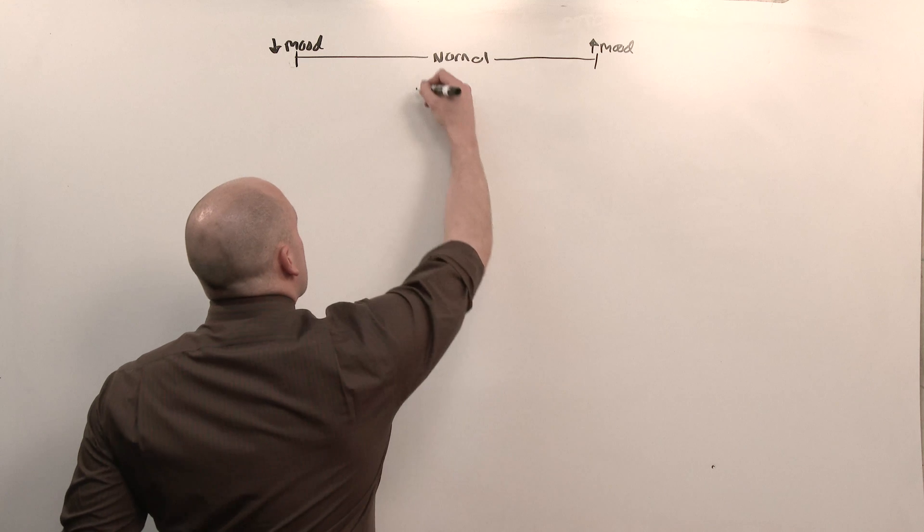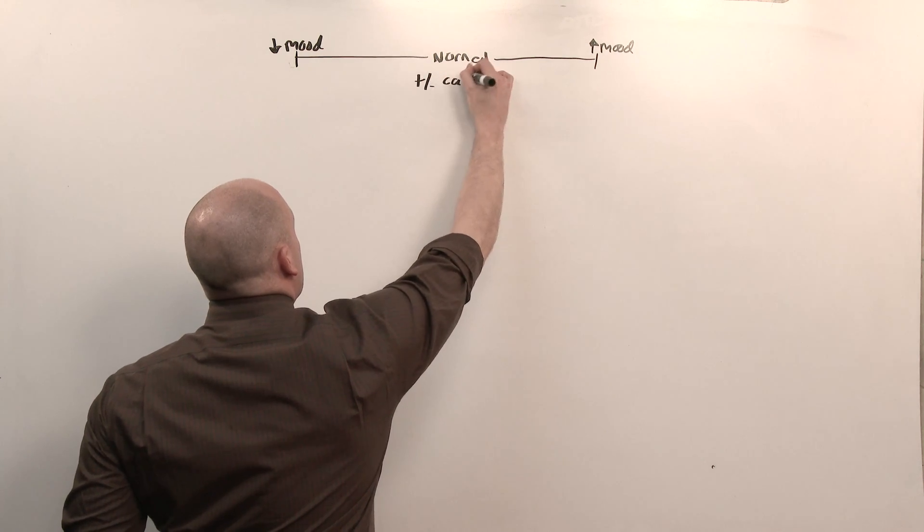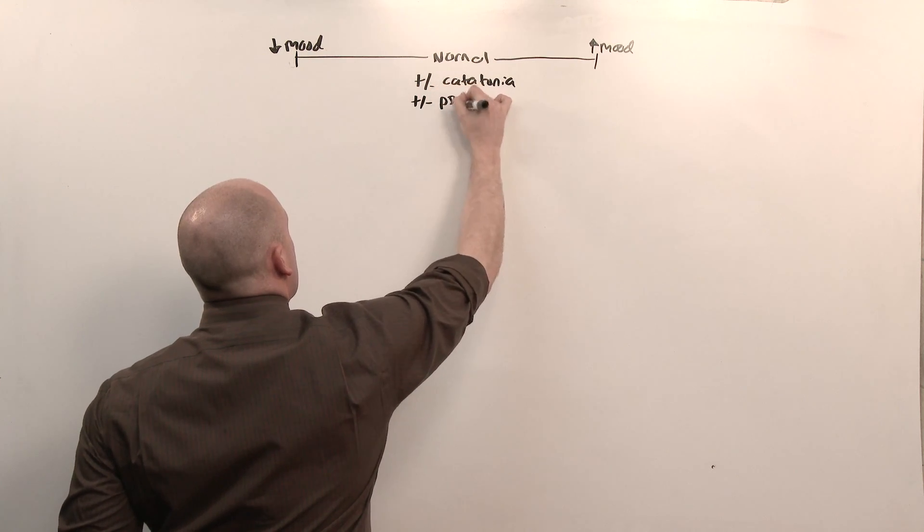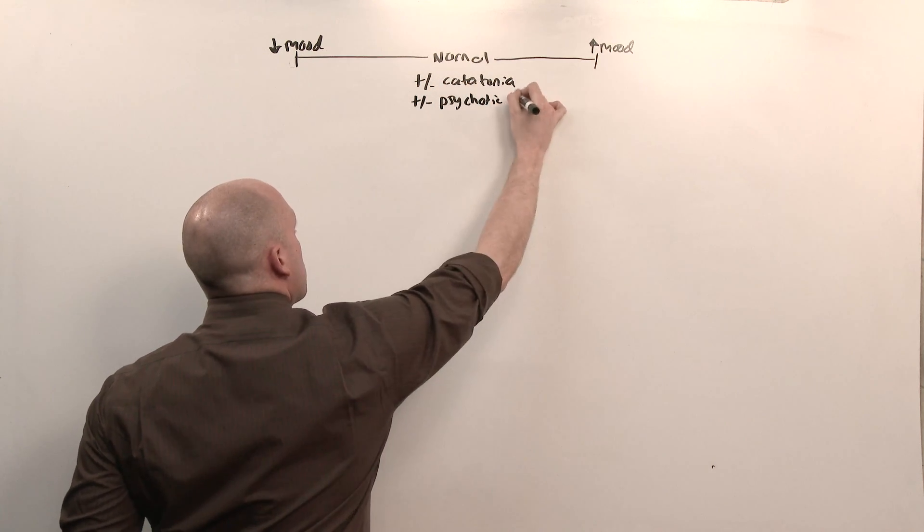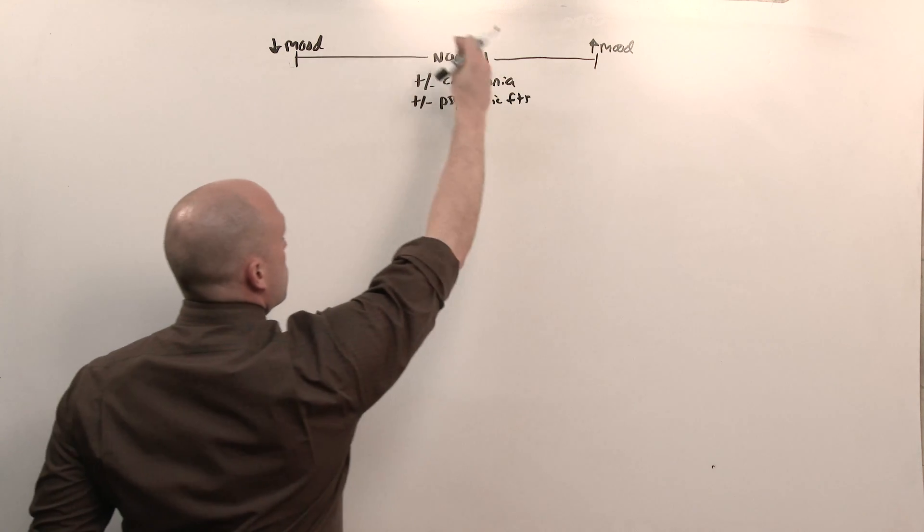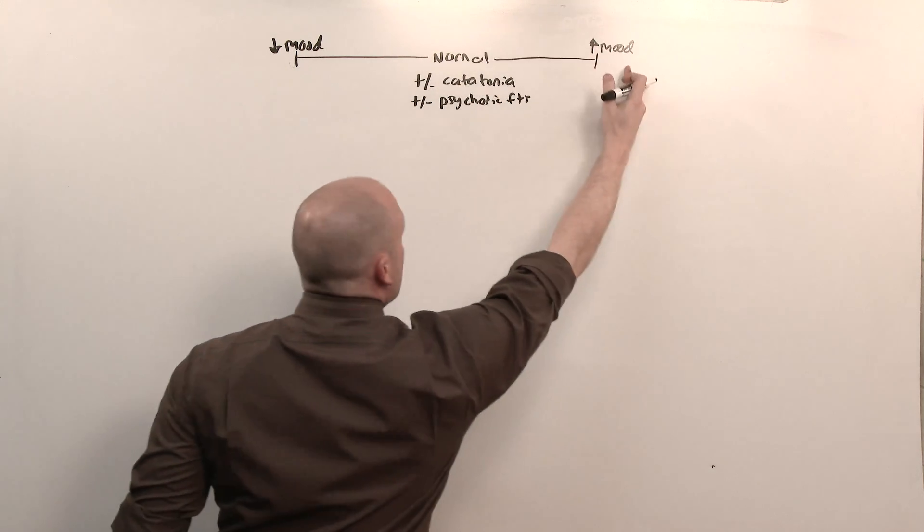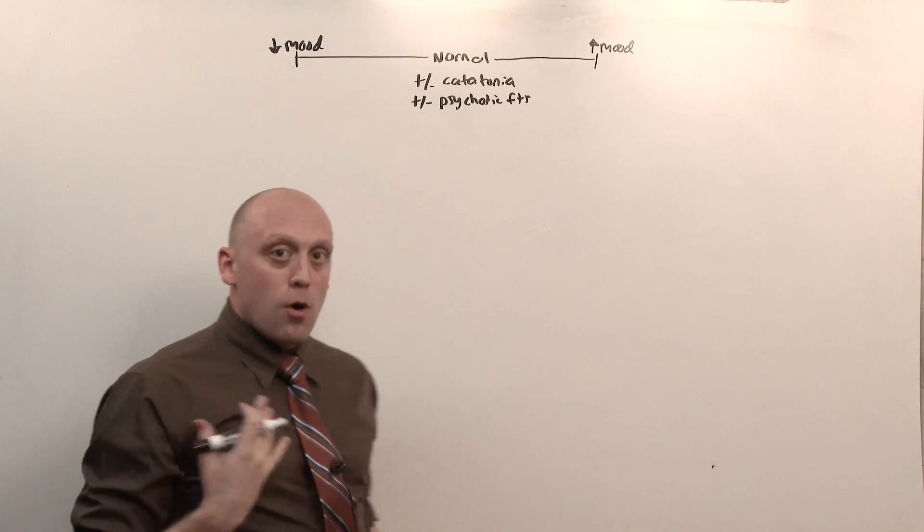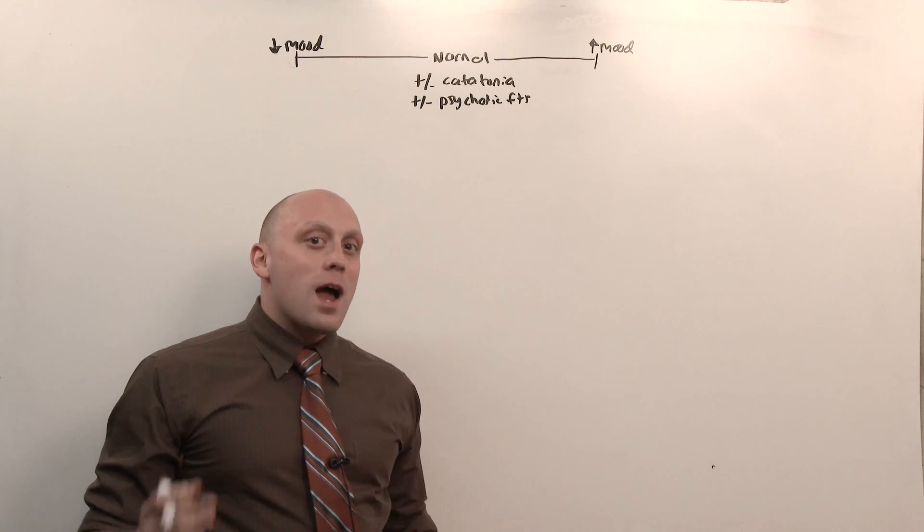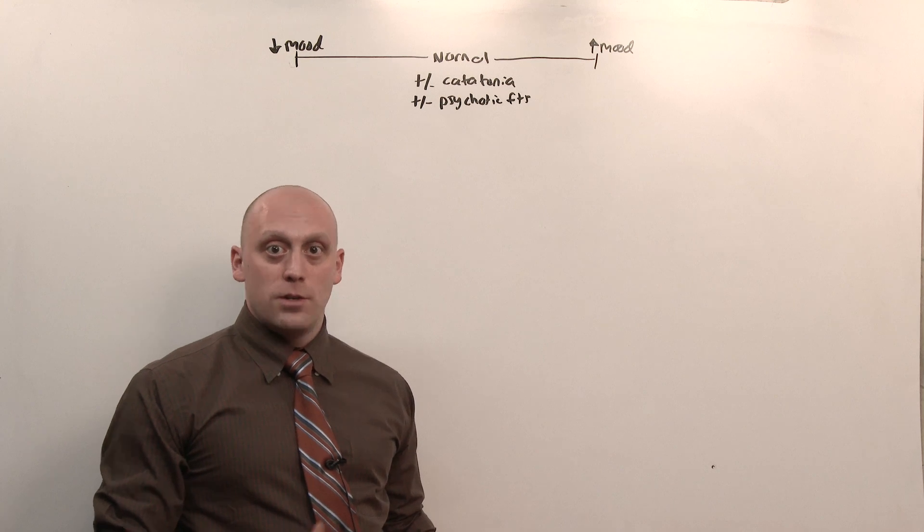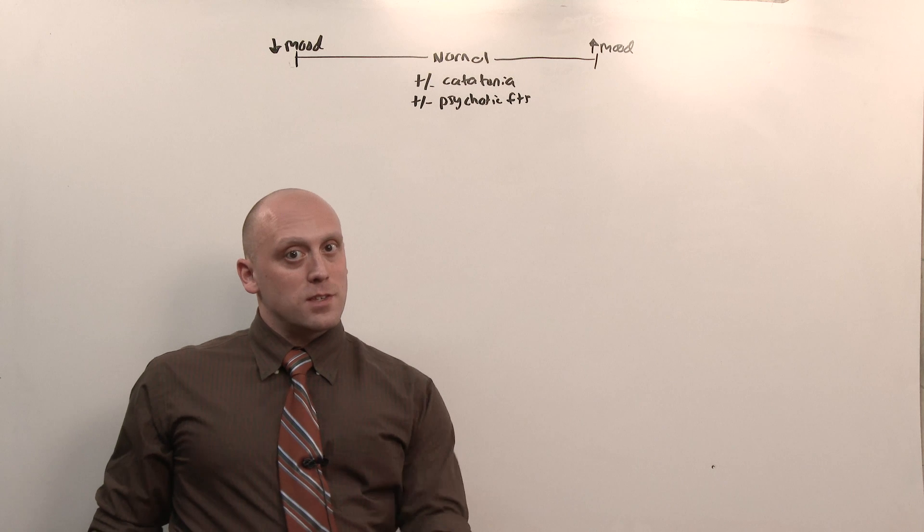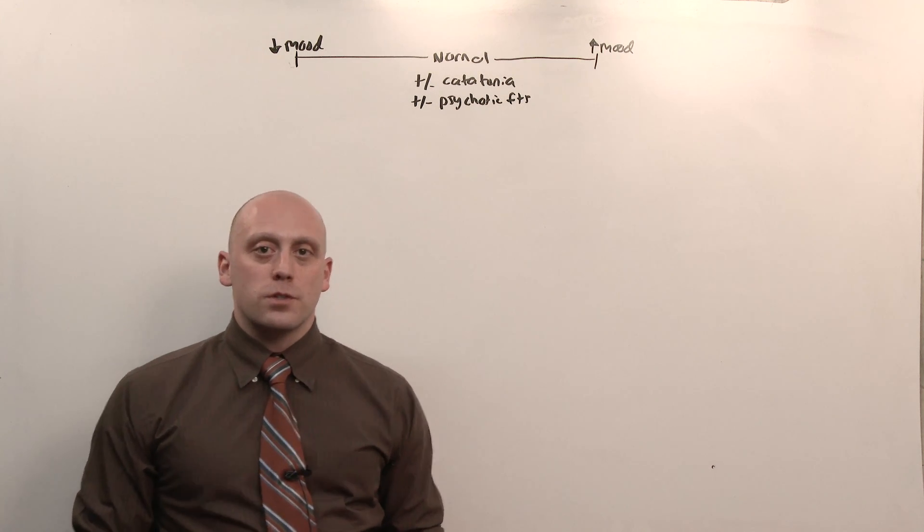The other thing you need to decide: are they presenting with catatonia, and name it with or without, and are they presenting with psychotic features? Just as someone could be mostly depressed but have a little hypomania, or be really manic with a little depression, all these diseases can present with a little or a lot of psychosis. If you have only mood and no psychosis, it's the mood disorder. If you have only psychosis and no mood, it's the psychotic disorder.